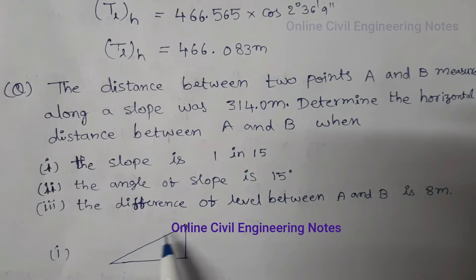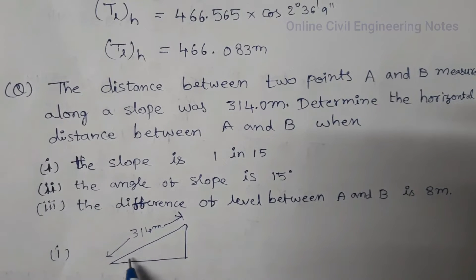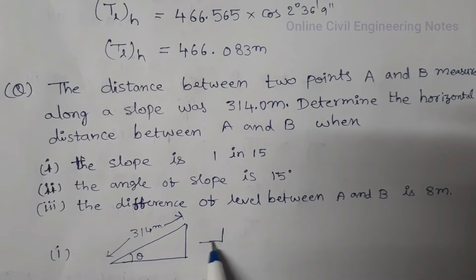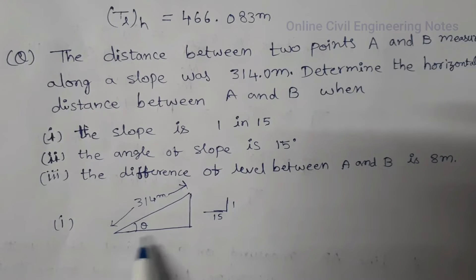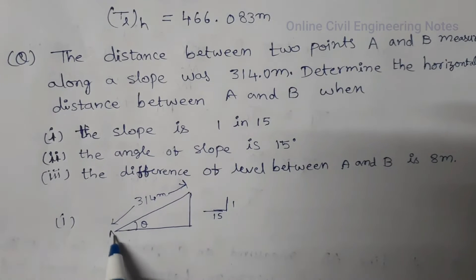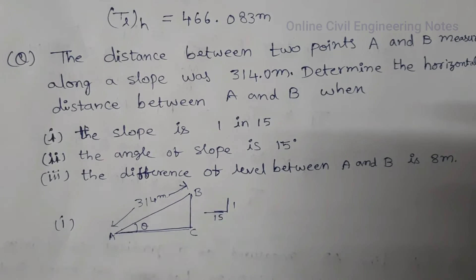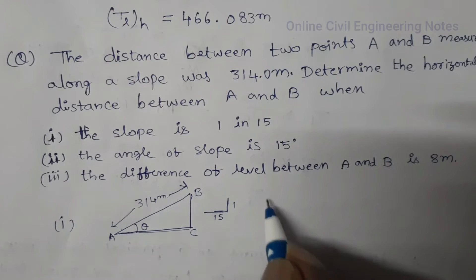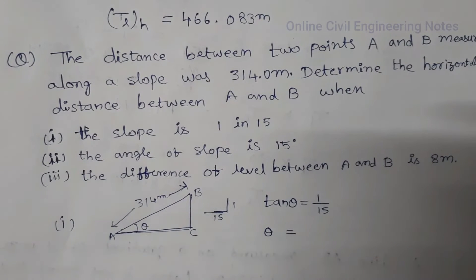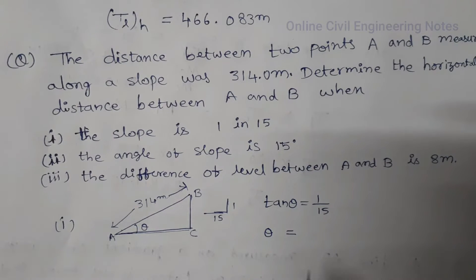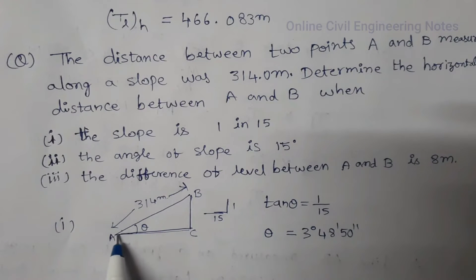The sloping distance was measured as 314 meters and the slope is 1 in 15. We have to find the horizontal distance between A and B. From this figure, tan theta is equal to 1 divided by 15, therefore theta is equal to 3 degrees 48 minutes 50 seconds.